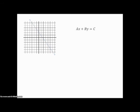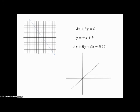Back in two dimensions, we have a couple of popular equations for a line. One is standard form, ax plus by equals c, and the other is slope-intercept form, y equals mx plus b. Now if we take that first equation in standard form and add a third component for z, a lot of people think that's going to be a line in three dimensions, but it is not.